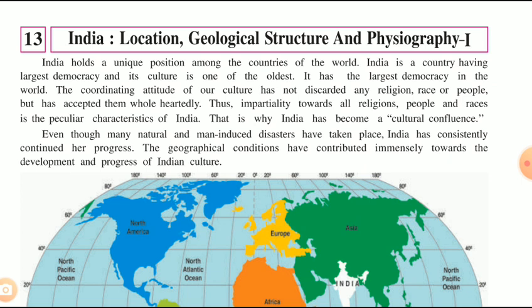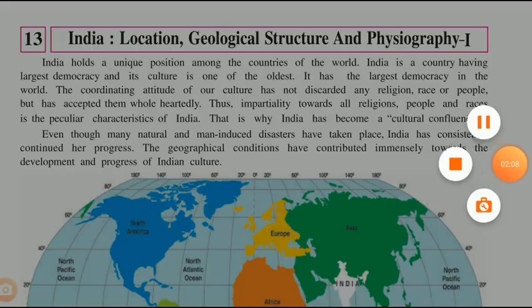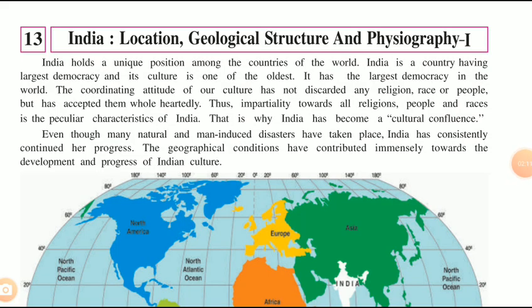India is one of the greatest countries in the world. It is a very vast country with various types of cultures that have flourished from time to time. India has a very old culture and heritage, diverse climatic conditions, various landforms, different types of rivers, lakes, ponds, a vast coastal area, and the greatest Himalayan range that stretches from Jammu & Kashmir to Arunachal Pradesh. In short, India is a unique country with a diverse geographical structure.